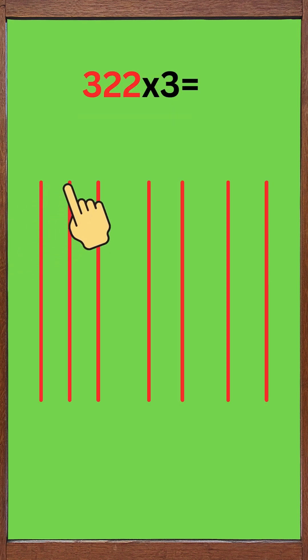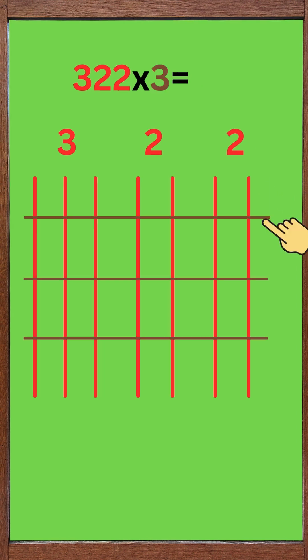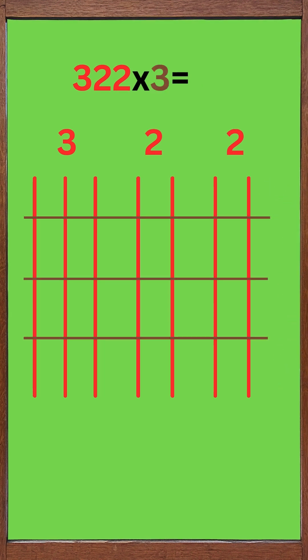First, we draw vertical lines for 322, like this. And for 3, draw 3 horizontal lines like this.